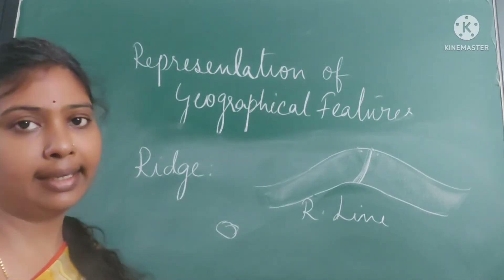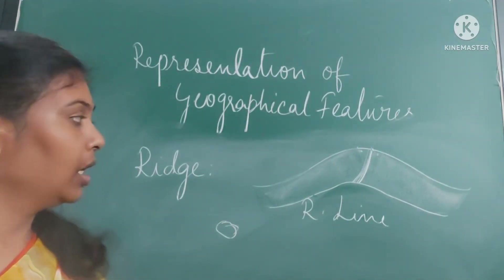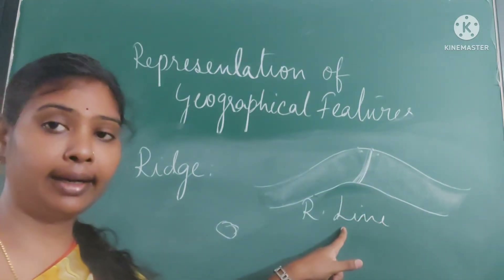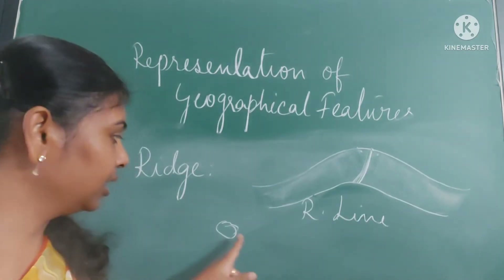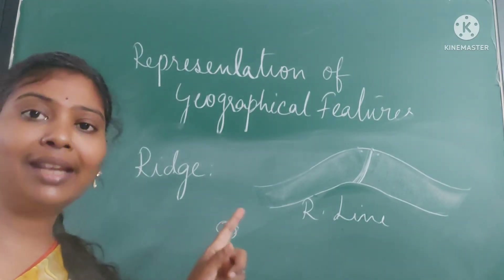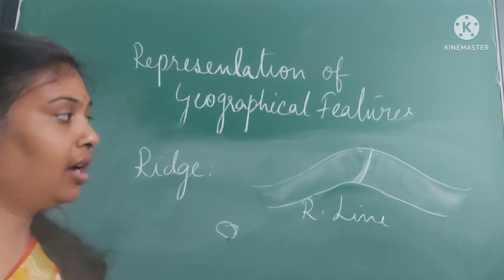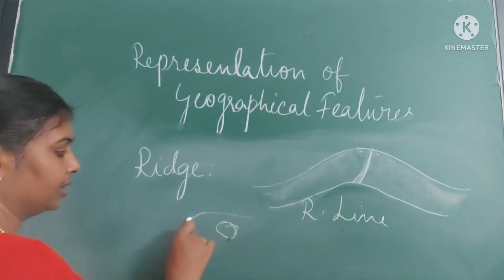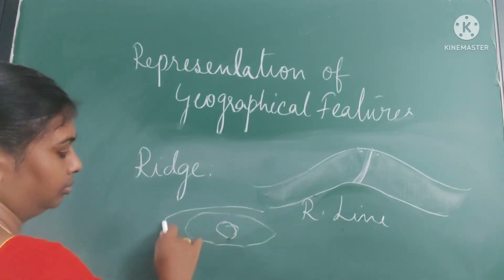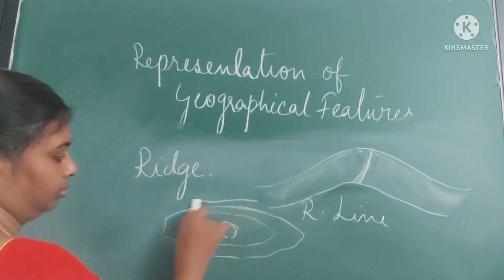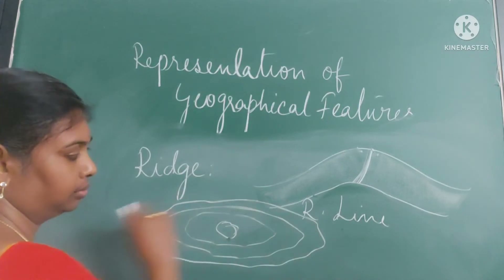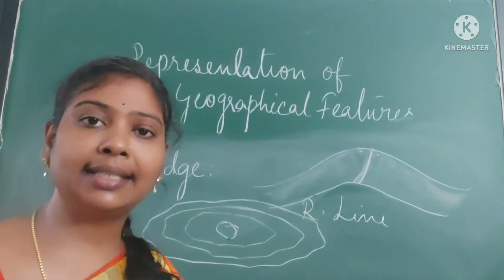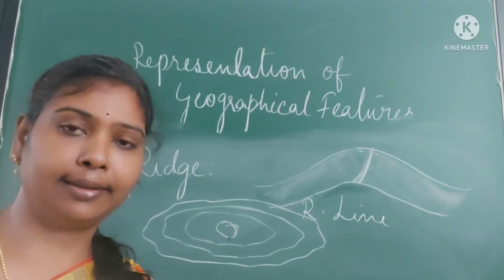The next one we are going to see is a ridge. The highest point is the ridge line. Near the ridge line the contours will be steeper, and all the others are closely spaced but elongated.